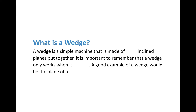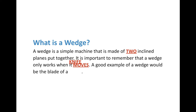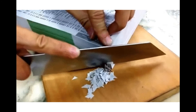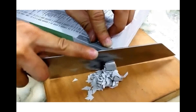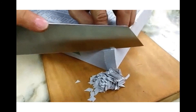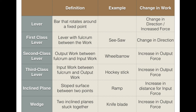The final simple machine is the wedge. A wedge is related to the incline plane in that it's two incline planes put together. It's important to remember that a wedge only works when it moves — it doesn't do anything if it's just sitting there. A great example is the blade of a knife. When we watch this knife cut the pages of a phone book, the only way the wedge pushes down and cuts the pages is if the user is pushing the knife. No pushing means no cutting.